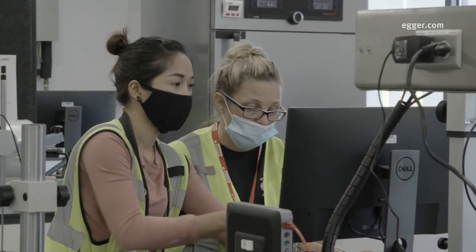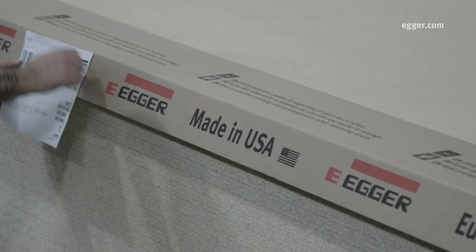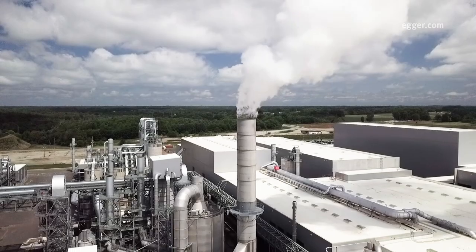Boards that fall below standard are used as cover packaging boards, broken up to make new boards, or to fuel the energy plant.